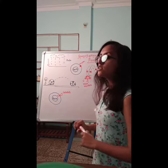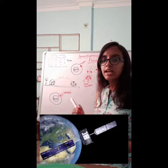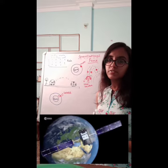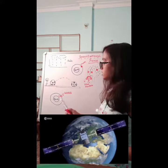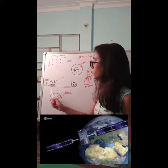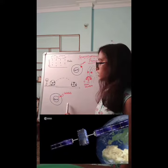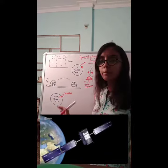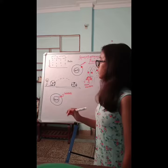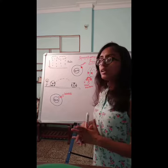Scientists send many artificial satellites to make them revolve around the earth in their particular orbits.